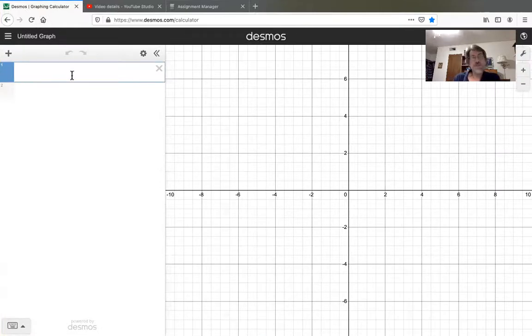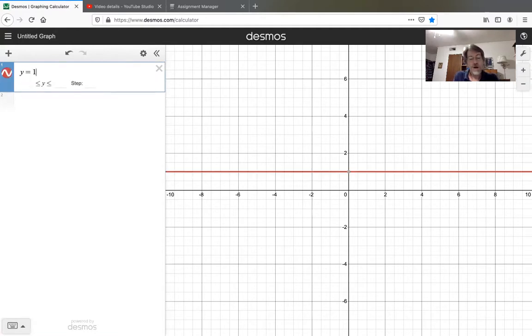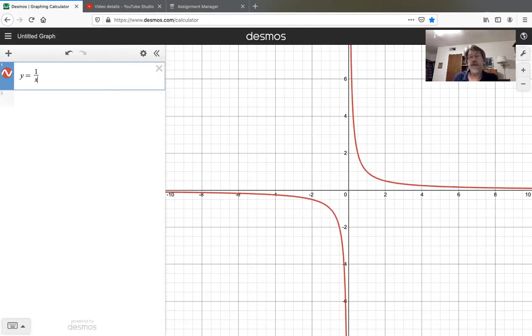Now in the previous video we drew by hand the graph of two fairly simple functions. We looked at y equal 1 over x and this is a more professional graph of the same thing. Notice that we do go through the point 1,1 and the point negative 1, negative 1. Vertical asymptote, horizontal asymptote. Very, very similar to what we drew by hand.